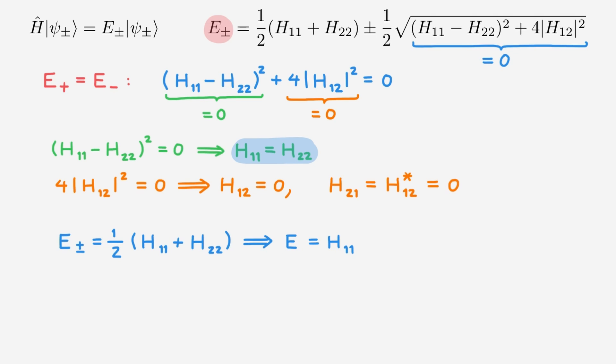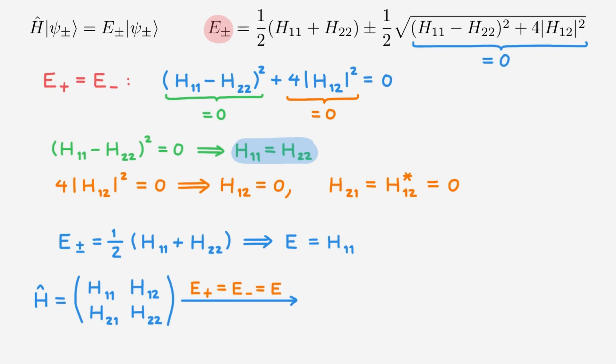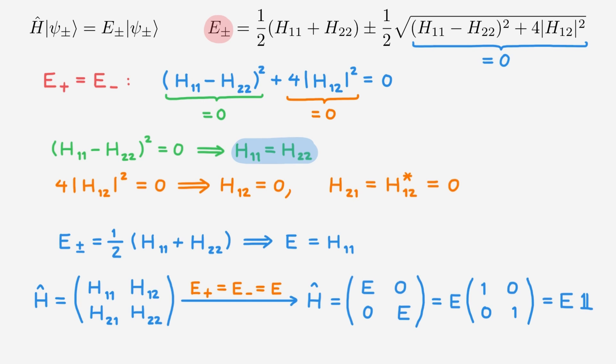So what do these results mean? Let's consider the usual two-state Hamiltonian. If we have two degenerate eigenvalues labelled with the same letter E, then the corresponding Hamiltonian must take a very simple form. We can rewrite this as E times the matrix (1, 0; 0, 1), which is basically E times the 2 by 2 identity matrix. So all of this means that a 2 by 2 Hamiltonian H will only have a degenerate spectrum if it is proportional to the identity matrix. For any other matrix, the spectrum will not be degenerate. And the proportionality constant is the value of the degenerate eigenvalue.